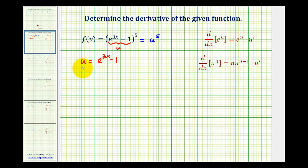But we know as soon as we identify u, we're going to need u prime. So now we need to differentiate e to the power of three x minus one. But this in itself is a composite function.